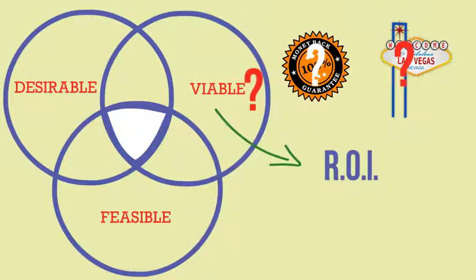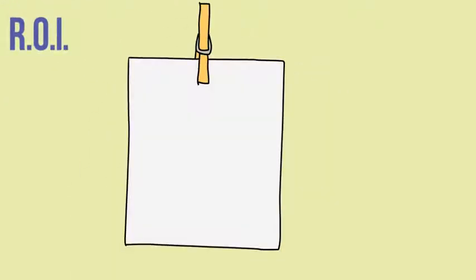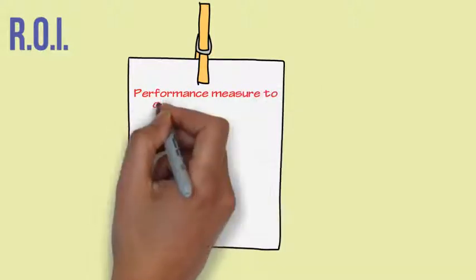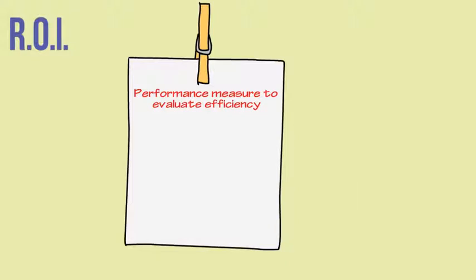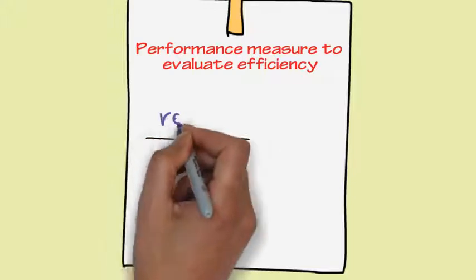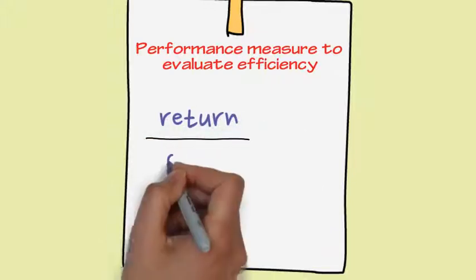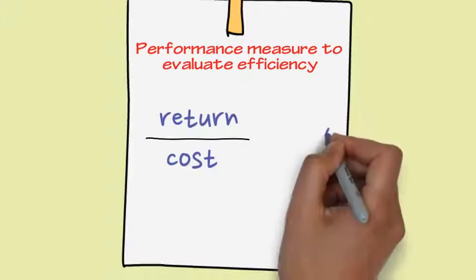So firstly what is ROI? There are many definitions but let's go with a performance measure used to evaluate the efficiency of an investment or to compare the efficiency of a number of different investments. To calculate ROI the benefit or return of an investment is divided by the cost of the investment. The result is expressed as a percentage or a ratio.